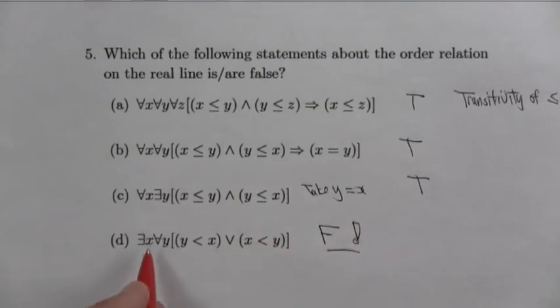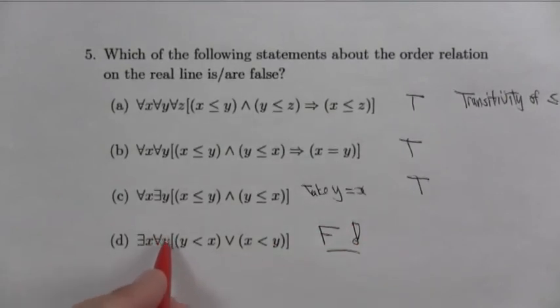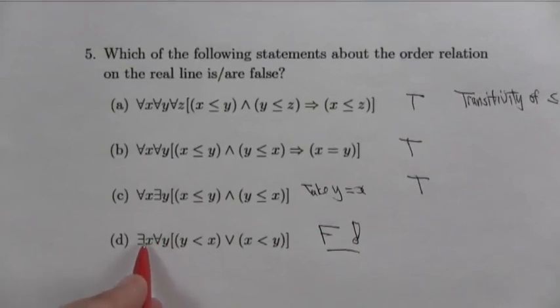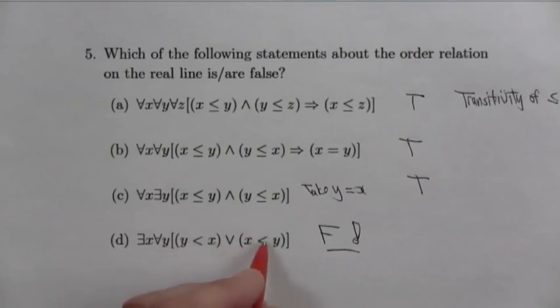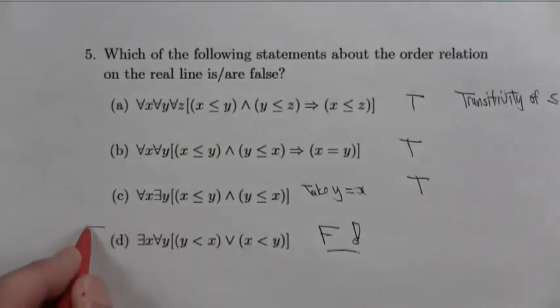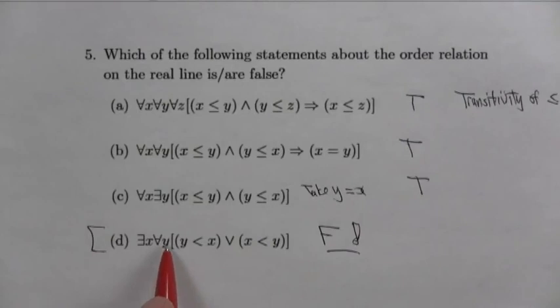And it's false because the universal quantifier includes the x itself. Given an x, any x that you find, when you universally quantify over y's, you include that x. And then that fails and that fails. So there's the one that's false. There is a false one. And it fails because universal quantifiers go over everything. And that means the y, among the y's that you're looking at, is the x that you start with.